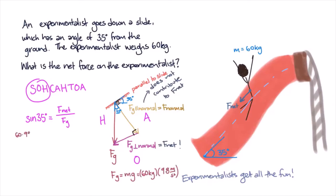So if we plug in all of our values and rearrange our equation, we find that the net force is equal to mg times sine of 35 degrees. And this is equal to 337 newtons, and we have our answer.